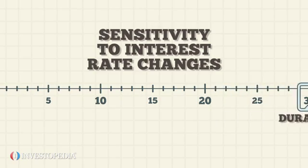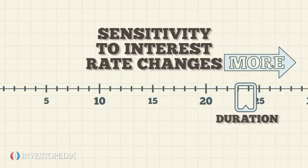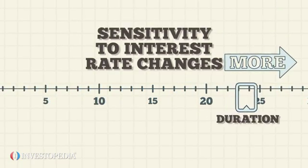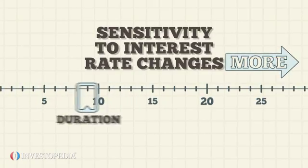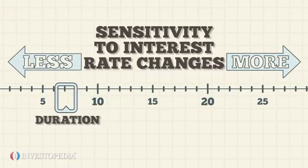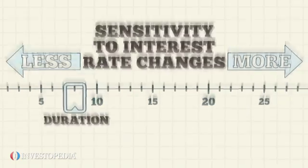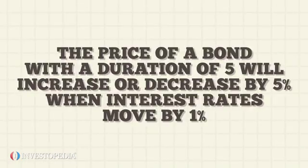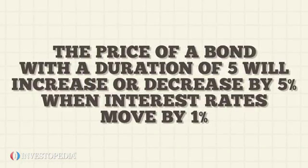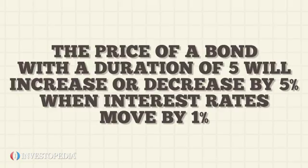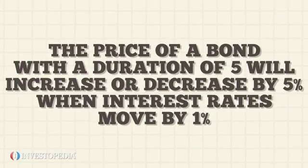A higher duration number means a bond's price is more sensitive to interest rate changes, while a lower duration number means a bond's price is less sensitive to interest rate changes. This means that the price of a bond with a duration of five will increase or decrease by five percent when interest rates move by one percent.